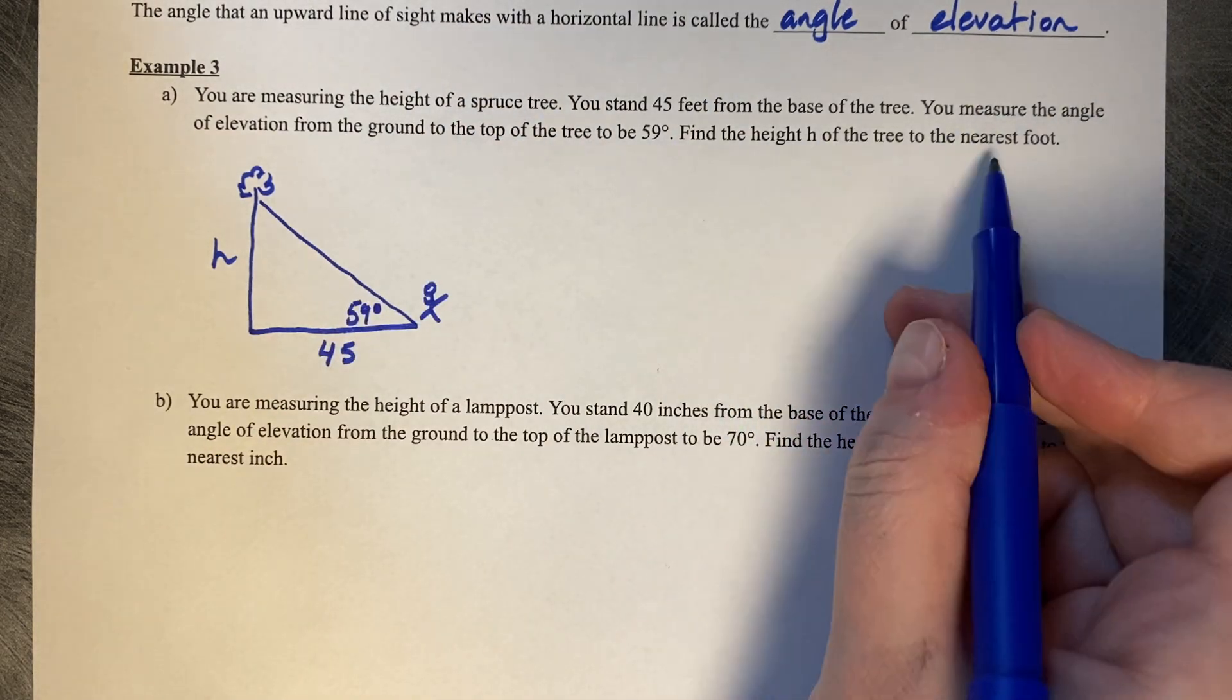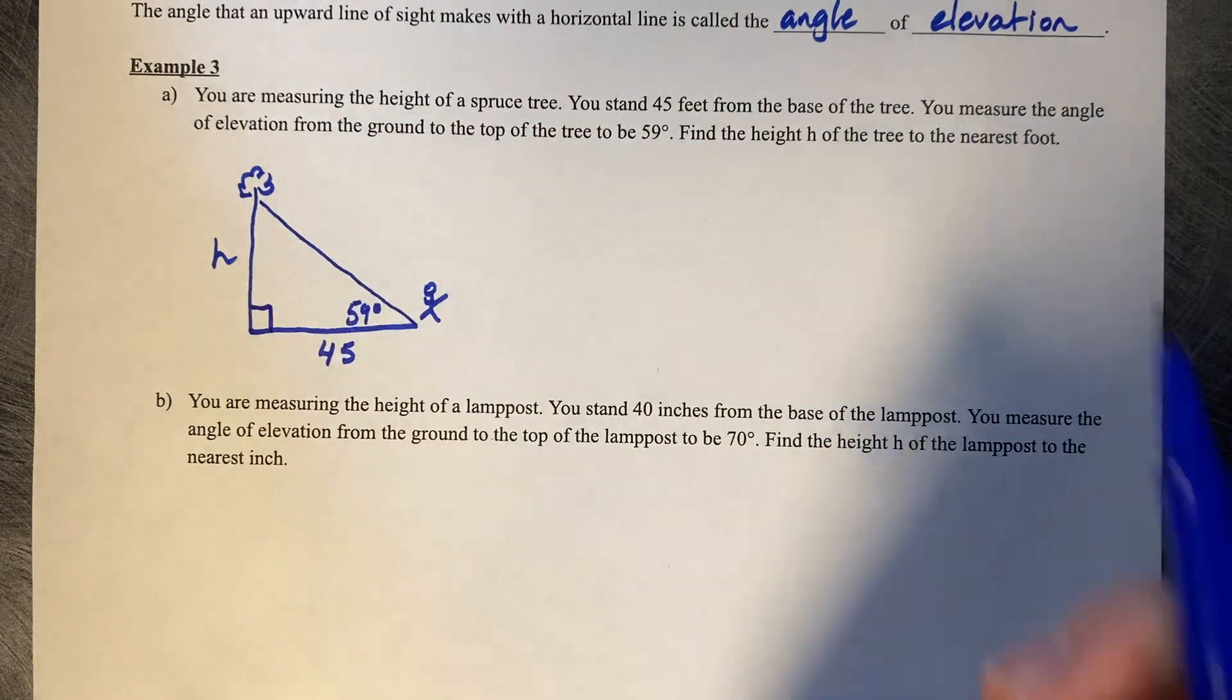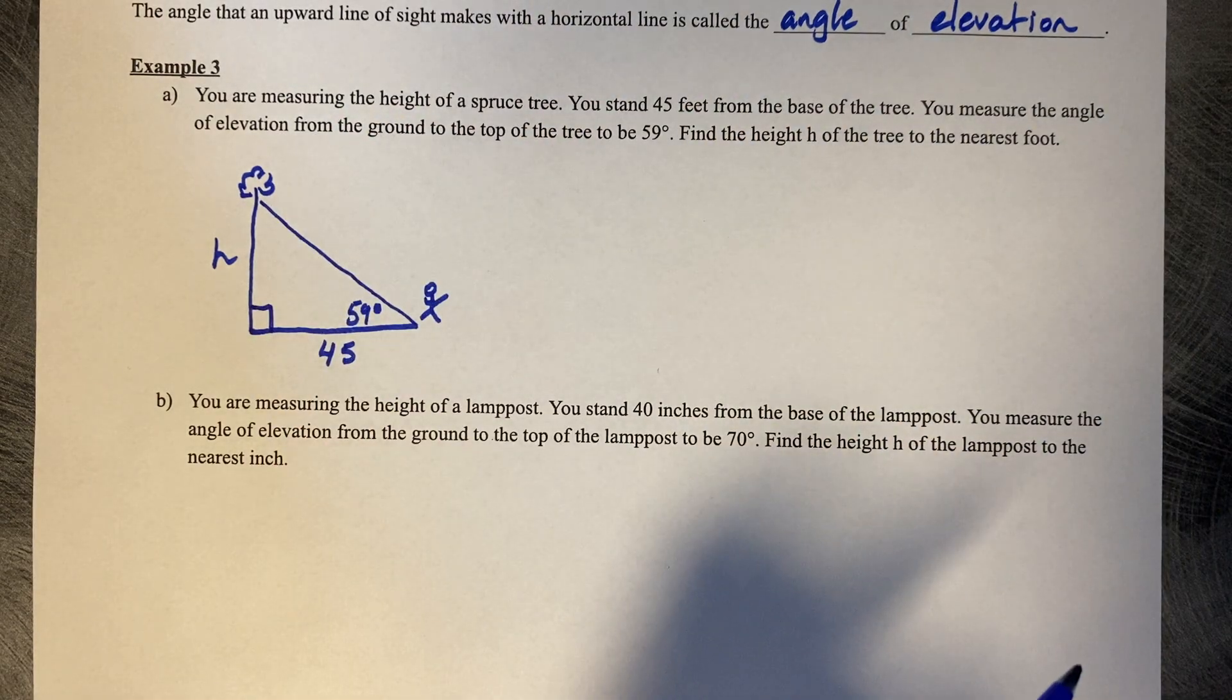The ground to the top of the tree is 59 degrees. Find the height h of the tree to the nearest foot. We can also safely assume that this is a very straight spruce tree, so it's a right triangle.